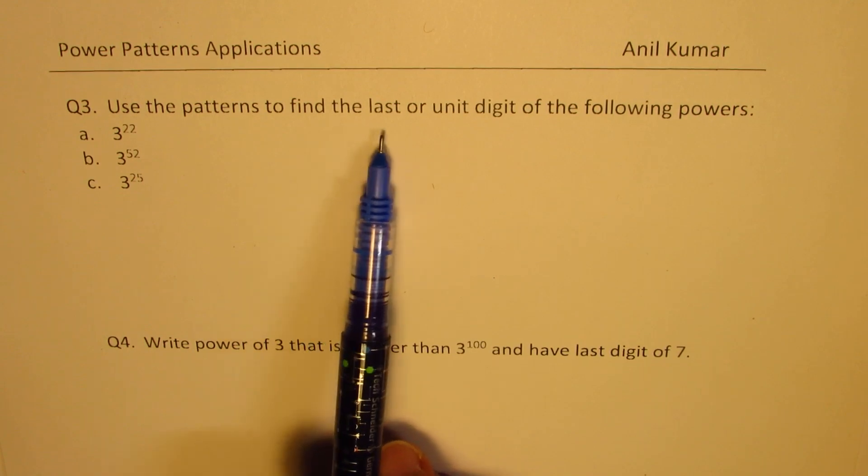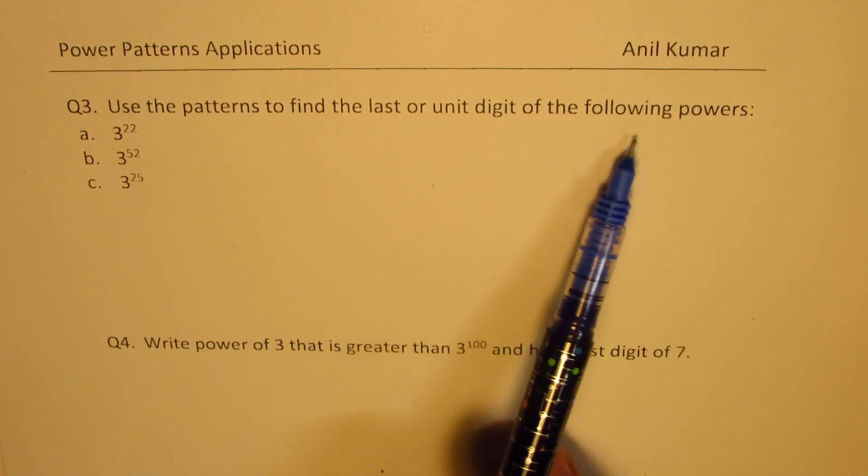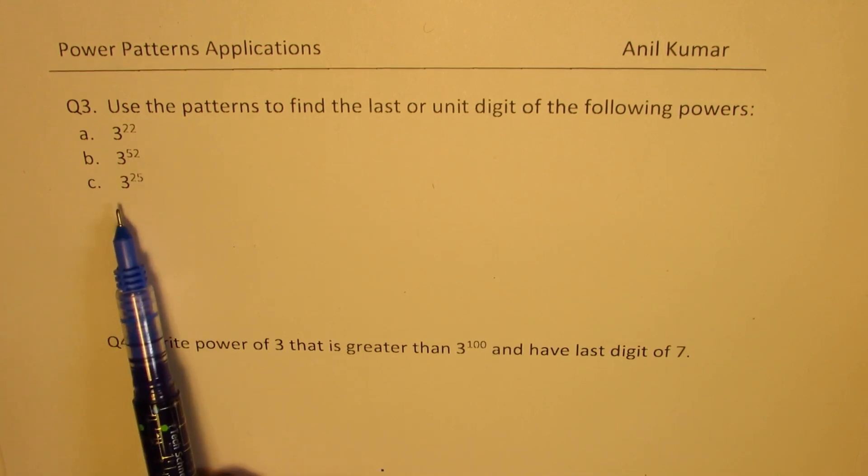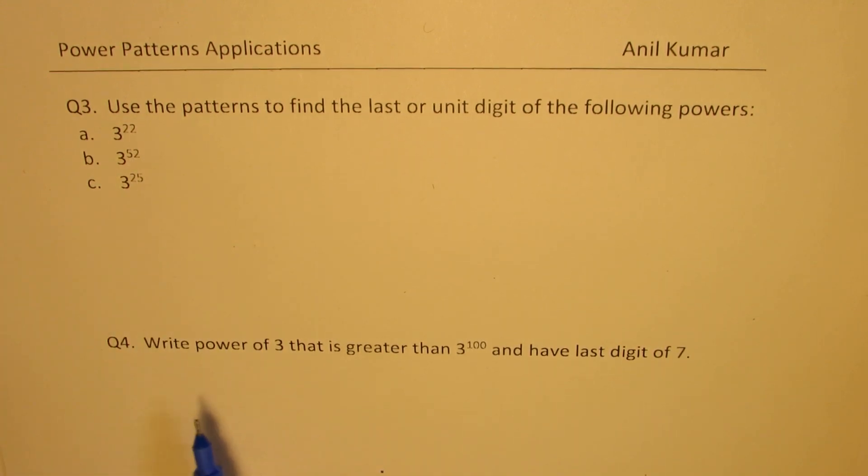Use the patterns to find the last or the unit digit of the following powers: 3 to the power of 52, 3 to the power of 25. And then we have a related question number 4, which is write power of 3 that is greater than 3 to the power of 100 and have last digit of 7. You can always pause the video, answer the question, and then look into my suggestions.